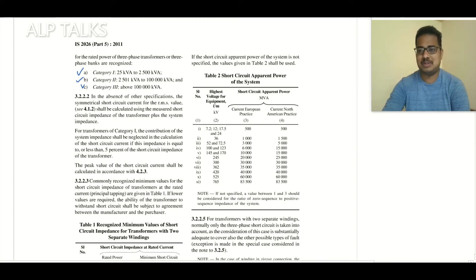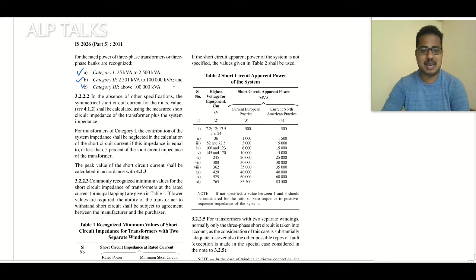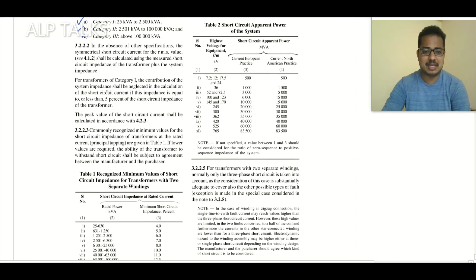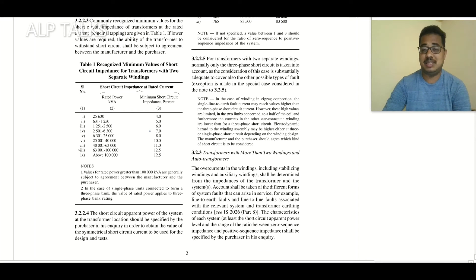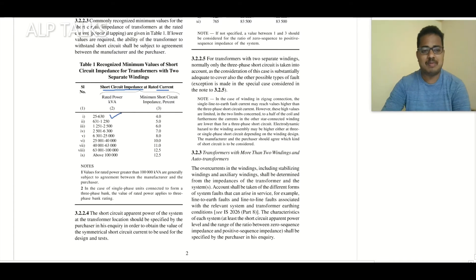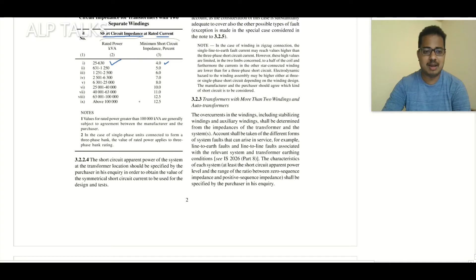Category 1 is 25 kVA to 2500 kVA, Category 2 is 2501 kVA to 100 MVA, and Category 3 is above 100 MVA. This standard also proposes the minimum impedance required for each kVA rating. For example, from 25 kVA to 630 kVA, 4% is the minimum recommended impedance based on short circuit current. From 1250 to 2500 kVA it is 6%.